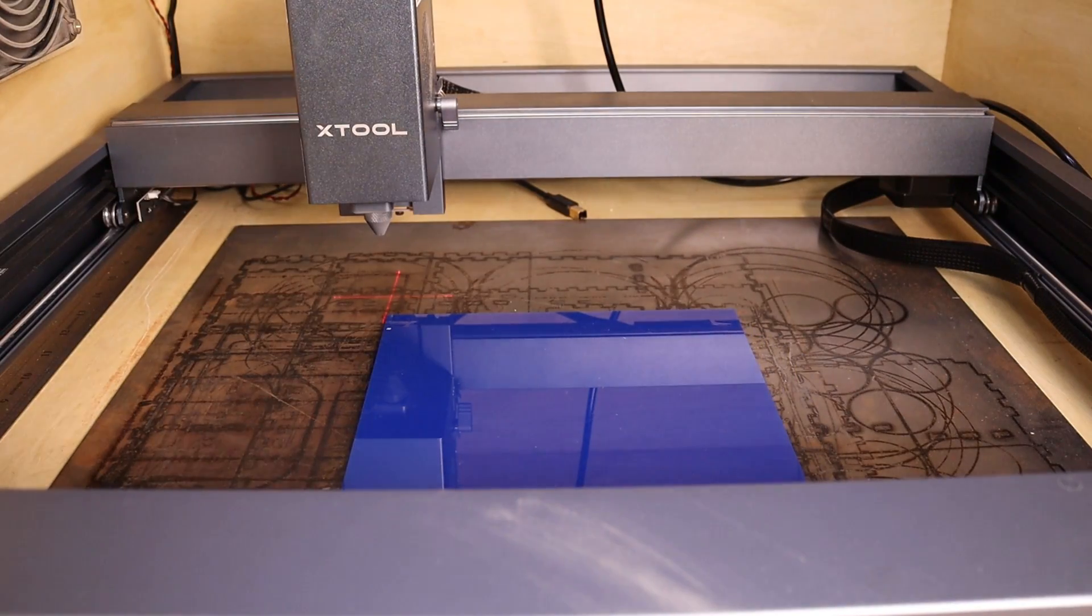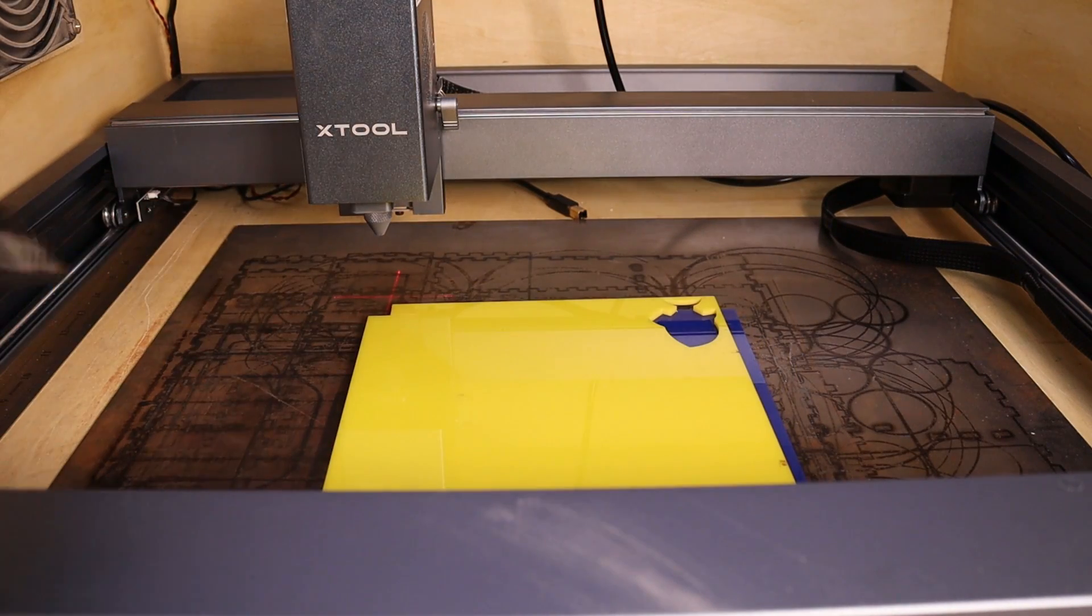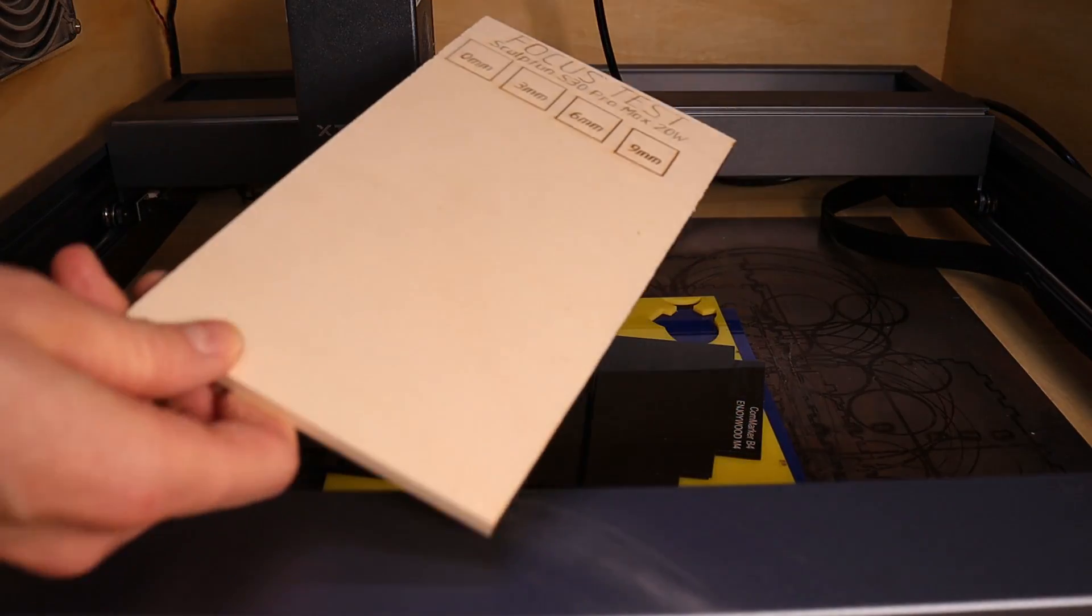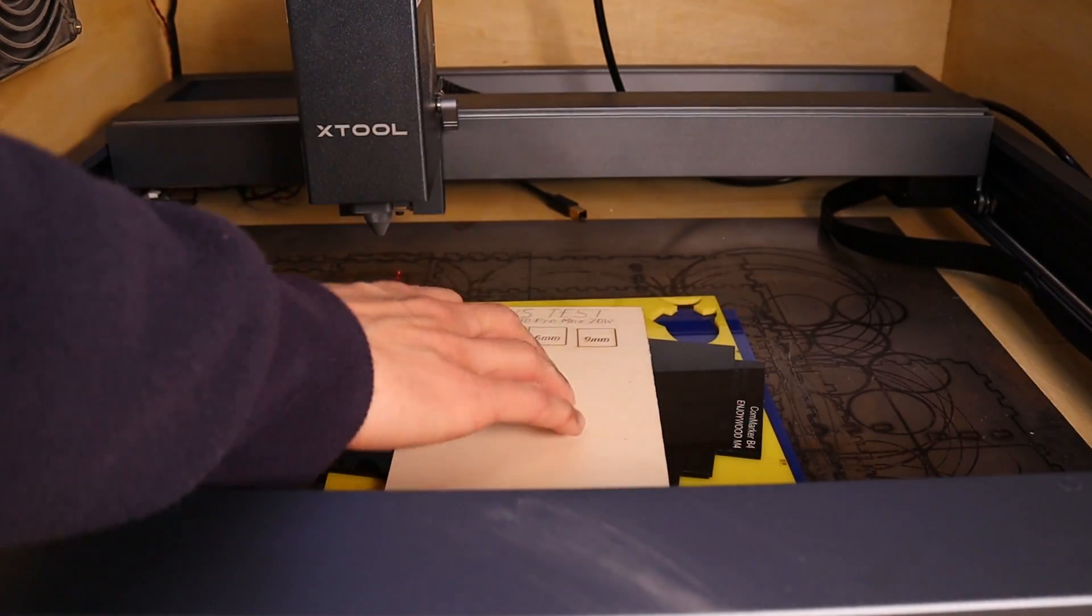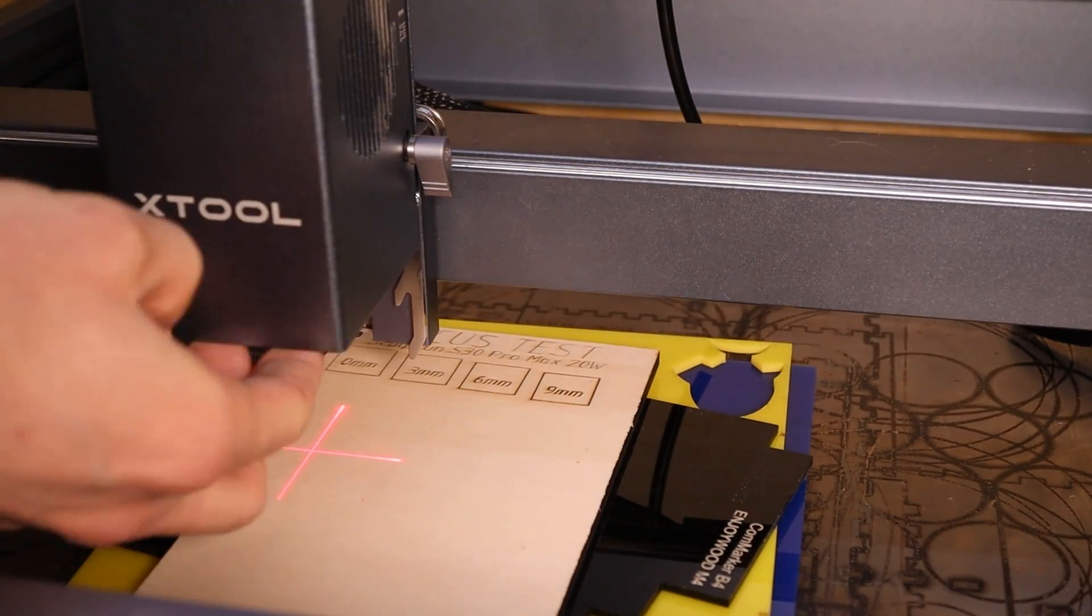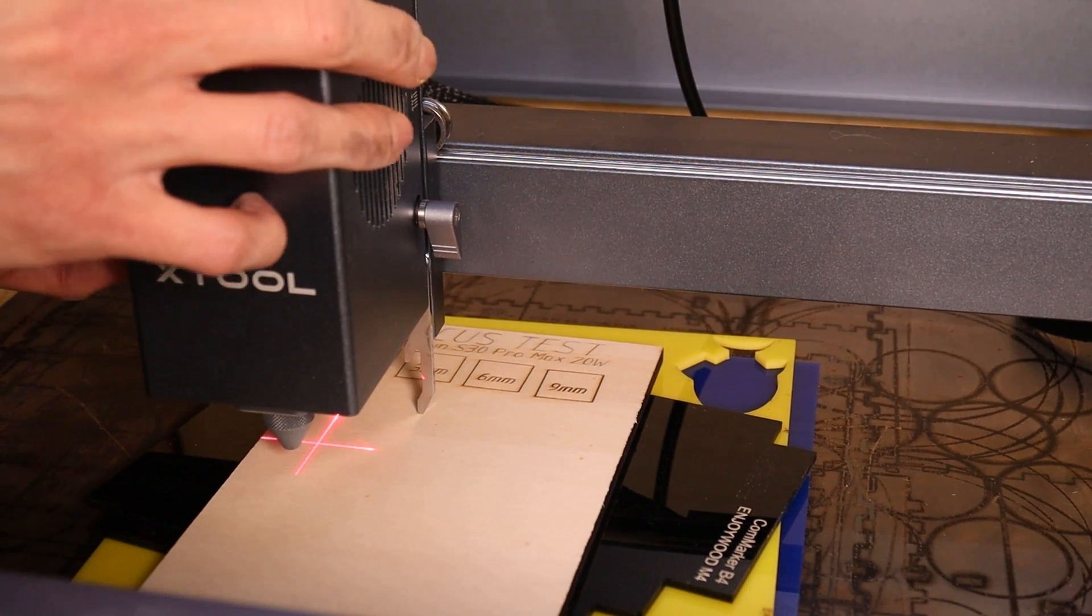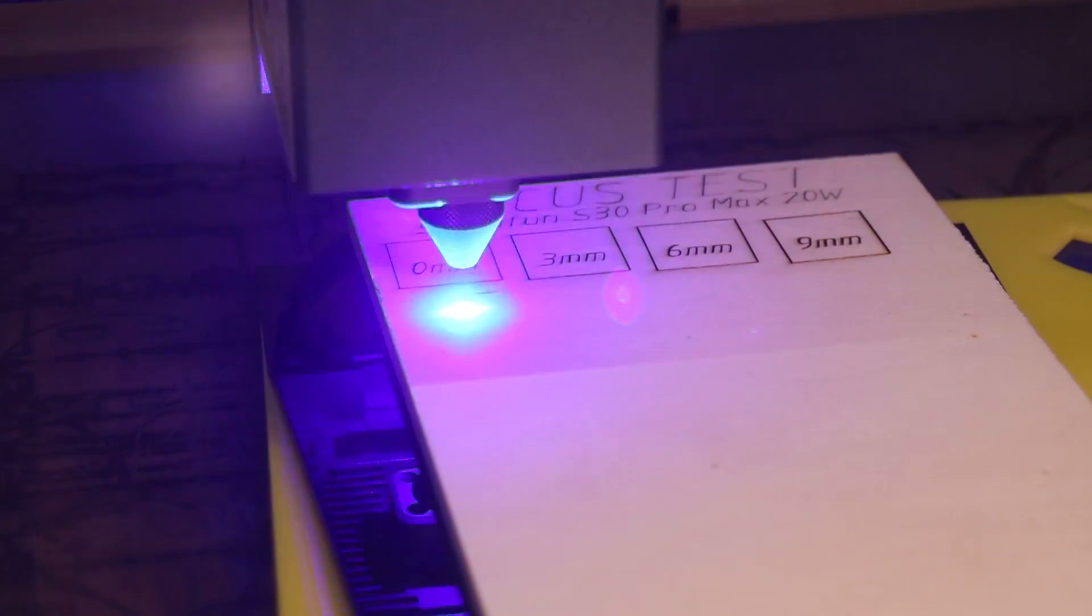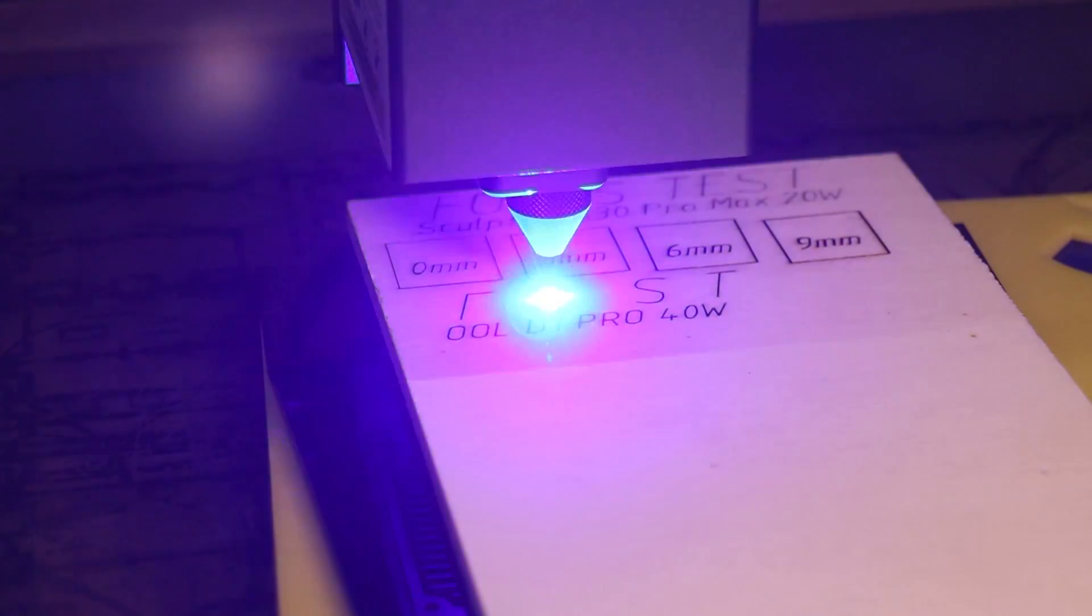The next test on the list is the focus distance test to see how far the laser beam retains its focus. I start by placing three 3mm acrylic sheets on the laser bed and place the wood board on top. Then, I focus the laser optimally and engrave the text and the first square with 0mm written in it. 0mm is the optimal focus.